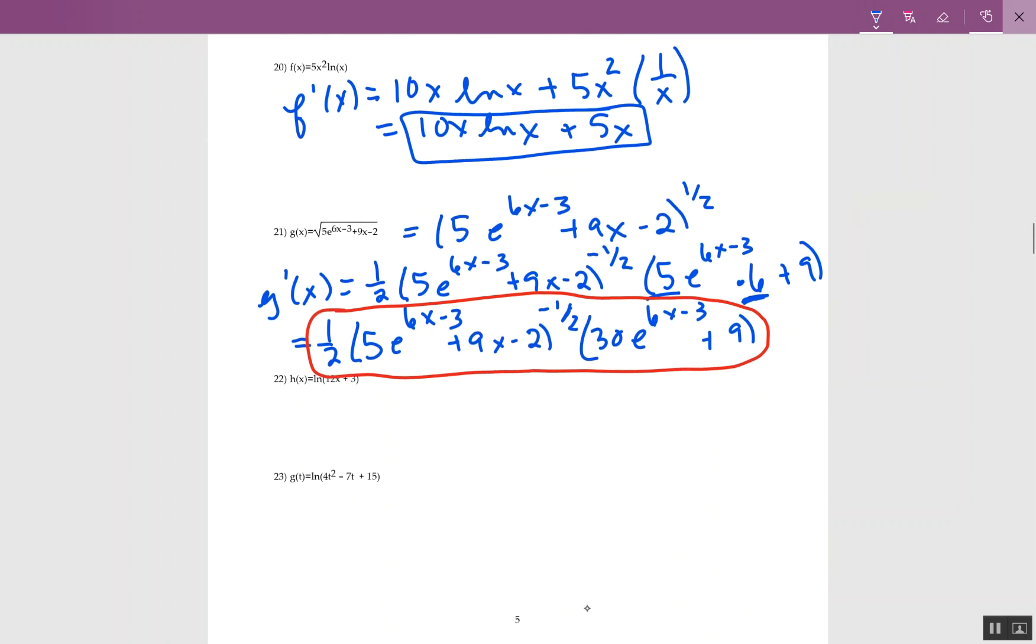This next one, hopefully you can still see through there, this is a natural log rule. So with natural log, I always think any log, I know that it's going to be a fraction. Whatever I'm taking the log of goes on the bottom. So there's 12x plus 3. The derivative of 12x plus 3 is 12. You can write it on top.